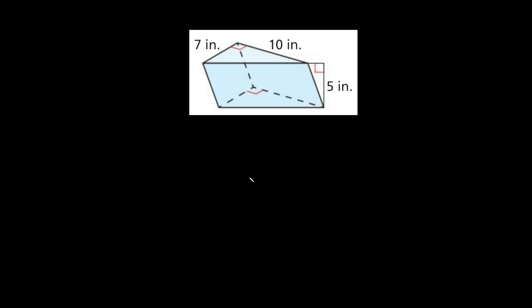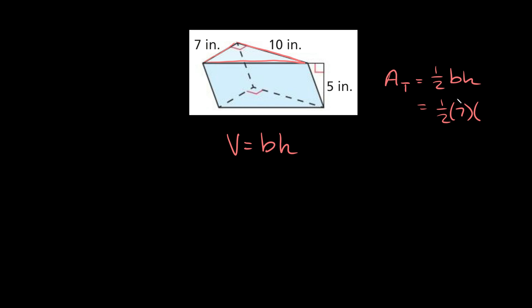Here's the next prism. As you can see we're given some dimensions: this is 7 inches, this is 10 inches, and the height is given as 5 inches. But as you can see the triangle is slanted — it's like leaning over to the left. But that doesn't change anything; you still use the exact same formula. So we find the area of the face: the area of that triangle is equal to one-half the base times the height, which is one-half times 7 times 10. So 7 times 10 is 70, and half of 70 is 35.